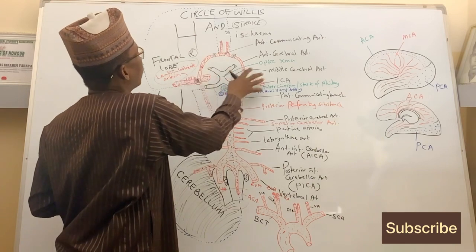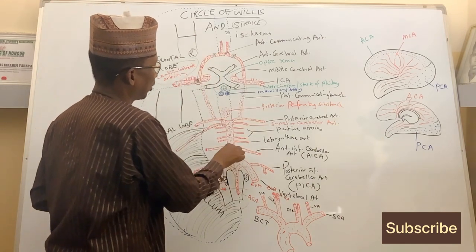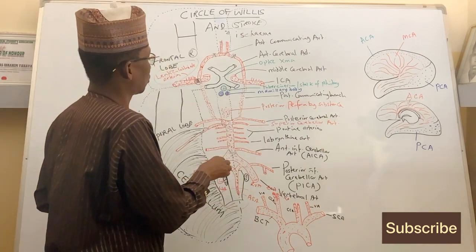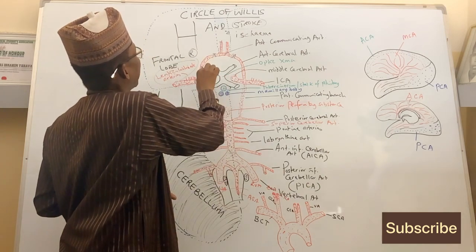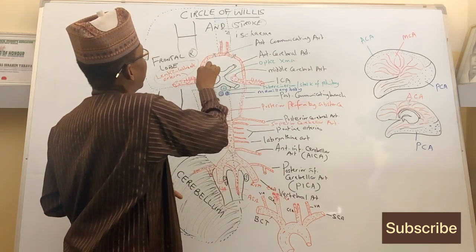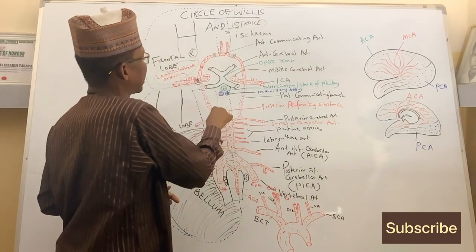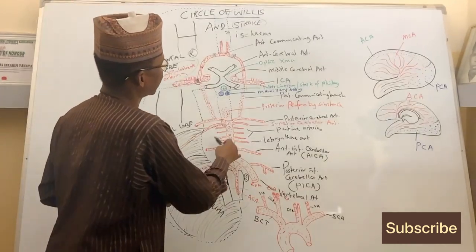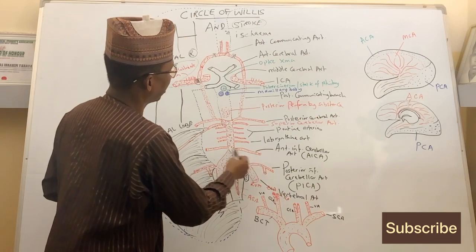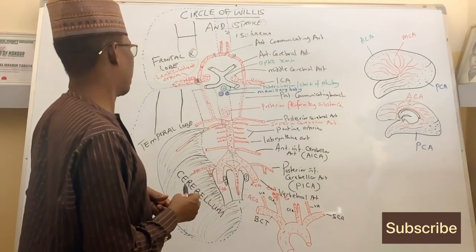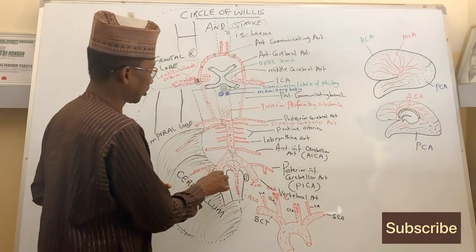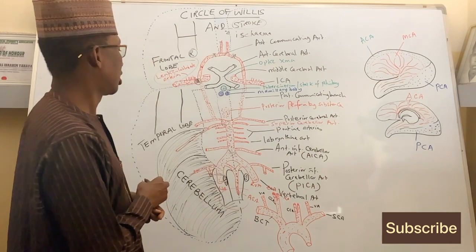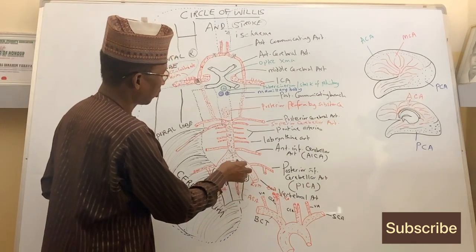If there is a blockage of the basilar artery at the level where it begins, it will not have much impact because blood from the two internal carotid arteries can follow the posterior communicating arteries into the posterior cerebral arteries, then into the basilar artery to supply its branches, including the anterior inferior cerebellar arteries. Similarly, if one vertebral artery is blocked, the other compensates.